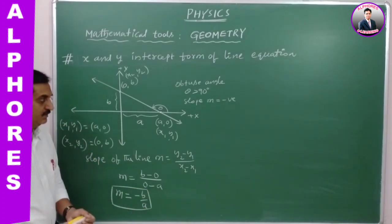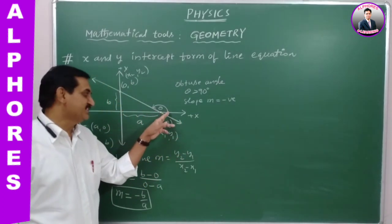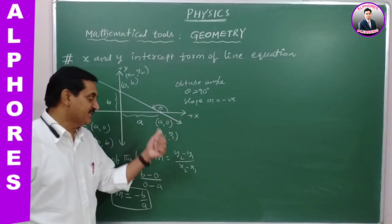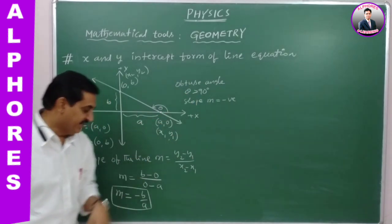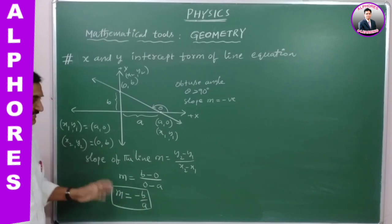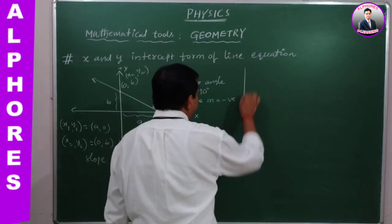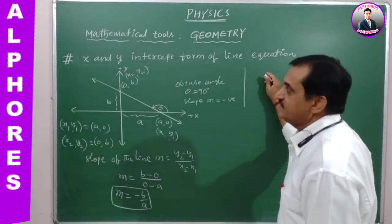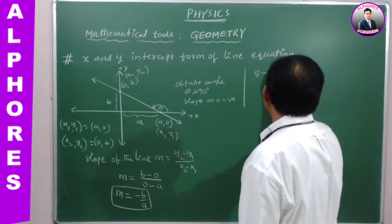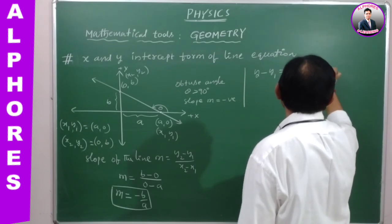This is the slope. As we decided at the beginning, the angle is obtuse, and when the angle made by the straight line with the positive X axis is obtuse, the slope will be negative — and indeed slope is minus B by A. Now, going for the line equation in intercept form, the line passing through point X1 comma Y1 is given by Y minus Y1 is equal to M into X minus X1.